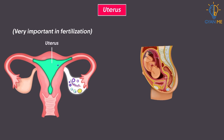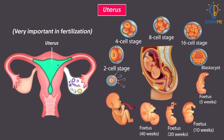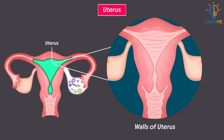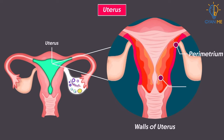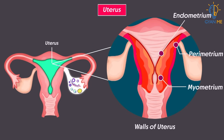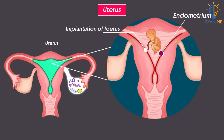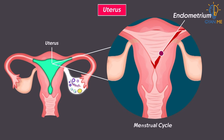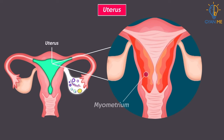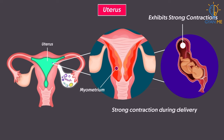Uterus plays a very important role in fertilization and development of the fetus, which occurs inside the uterus. For this purpose, the wall of the uterus is made thick and consists of three layers of tissue: the external thin membrane called perimetrium, the middle thick layer of smooth muscle called myometrium, and the inner glandular layer called endometrium that lines the uterine cavity. This endometrial wall is very important since implantation of the fetus, or growing baby, sticks to this wall. The endometrium undergoes cyclical changes during the menstrual cycle — it gets thin and thick alternately.